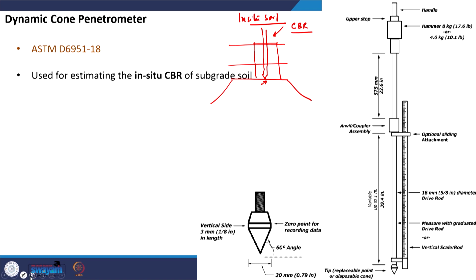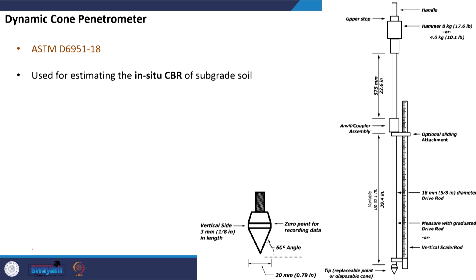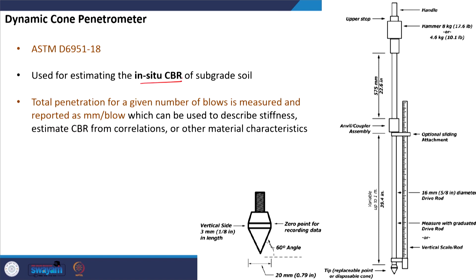This is an empirical test — a simple test to be performed in the field if we do not have much time to take the sample, go to the lab, and do the testing. This will be a quick test for us, used for estimating the in-situ CBR of subgrade soil. In this test, we measure the total penetration for a given number of blows and the result is reported in terms of mm per blow.